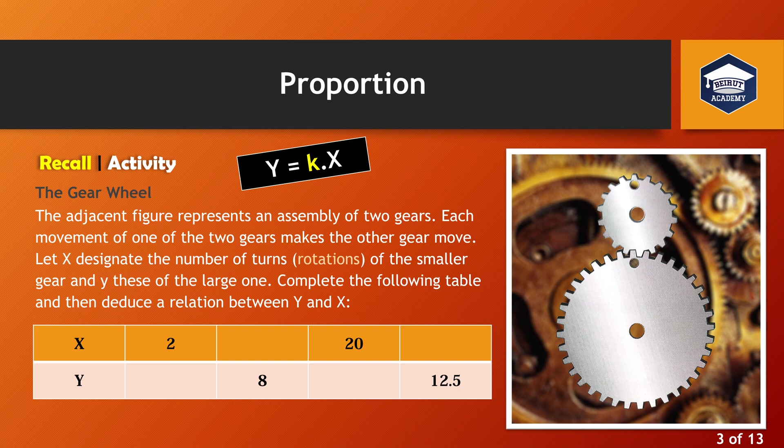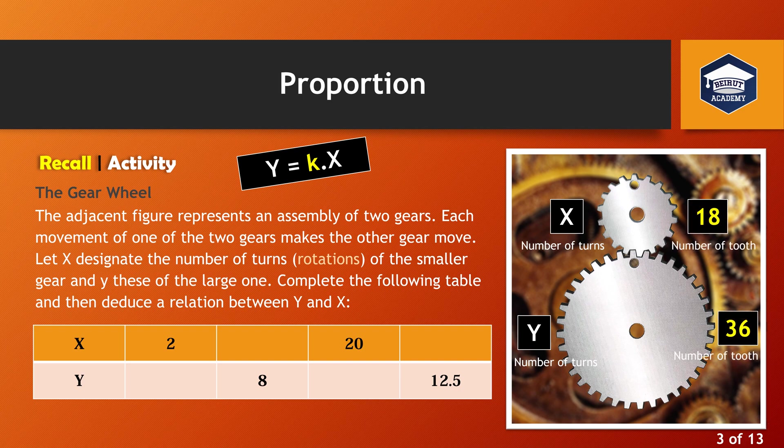We already know the relation between any proportion is y equals kx. To deduce the relation between y and x, which represents the ratio k, we should either measure the diameter of each of the gears or simply count the number of teeth of each of them, then divide the number of the smaller gear on the larger one. Hence, the smaller gears teeth is equal to 18 and the larger one is equal to 36, so we deduce the relation or the ratio k equals 18 over 36 equals half.